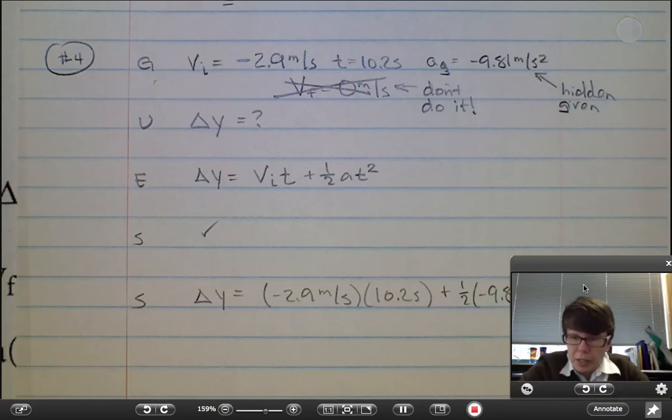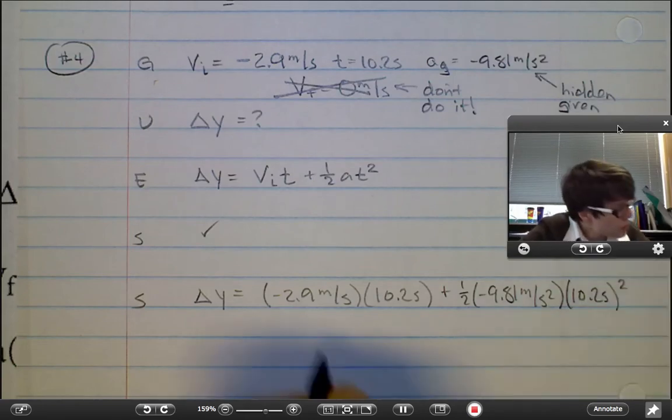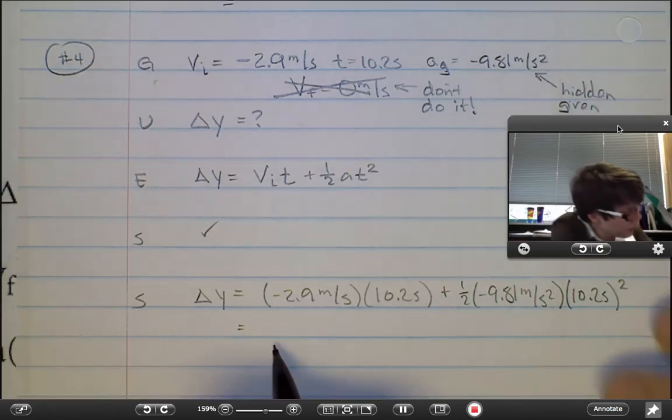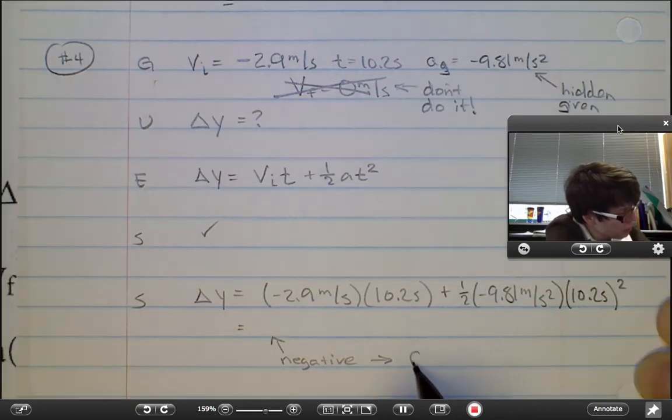Let me move my own mug out of the corner here so you can actually see the rest of that writing. This will give you a delta y. Beware here. It's going to be a negative number.